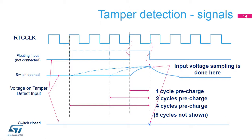This figure illustrates tamper detection using the internal pull-up. The internal pull-up can be applied for 1, 2, 4, or 8 cycles. If the switch is opened, the level is pulled up by the resistor. If the switch is closed, the level remains low. The input voltage is sampled at the end of the pre-charge pulse.